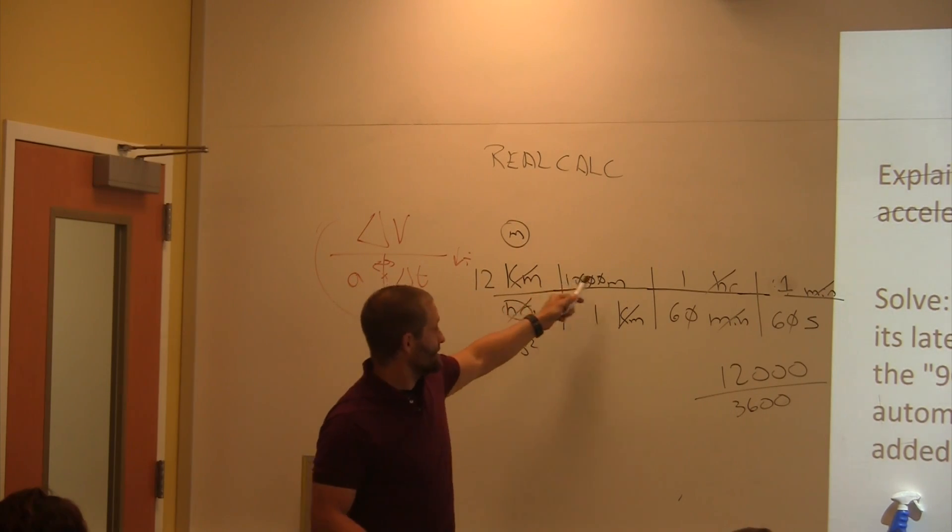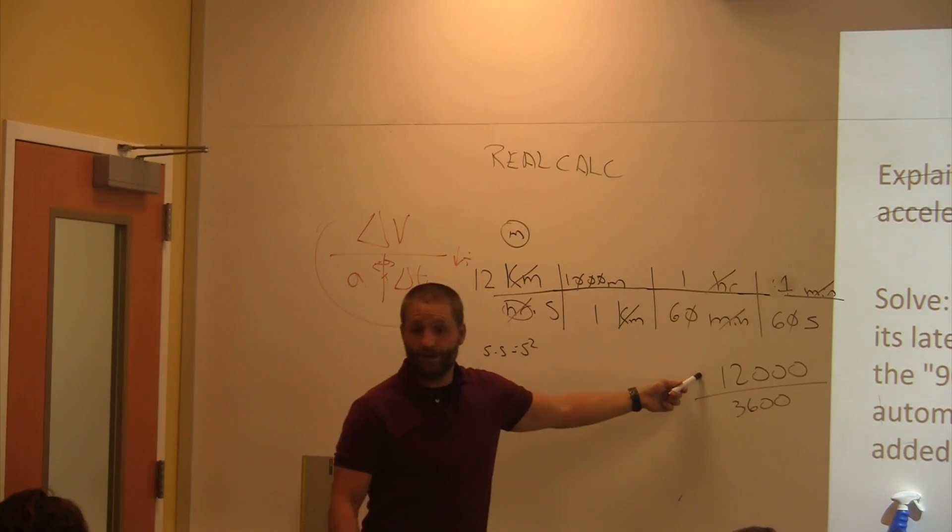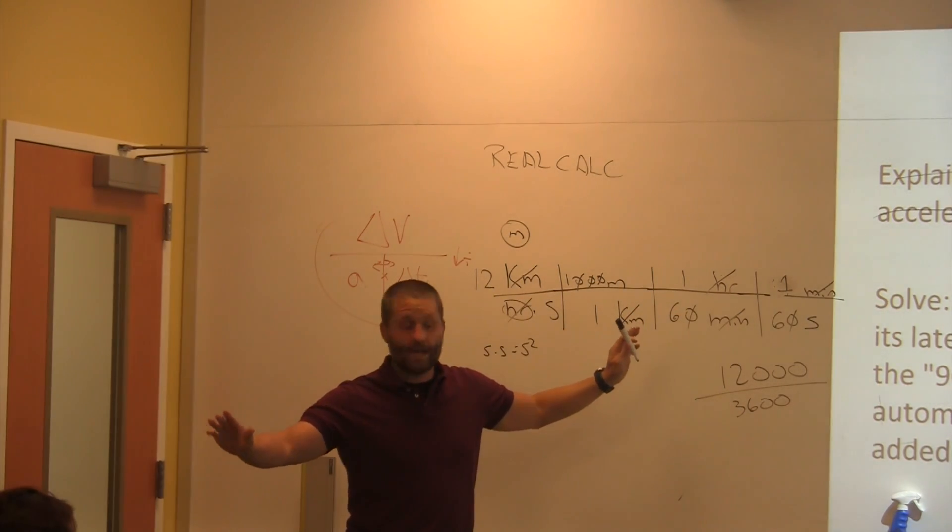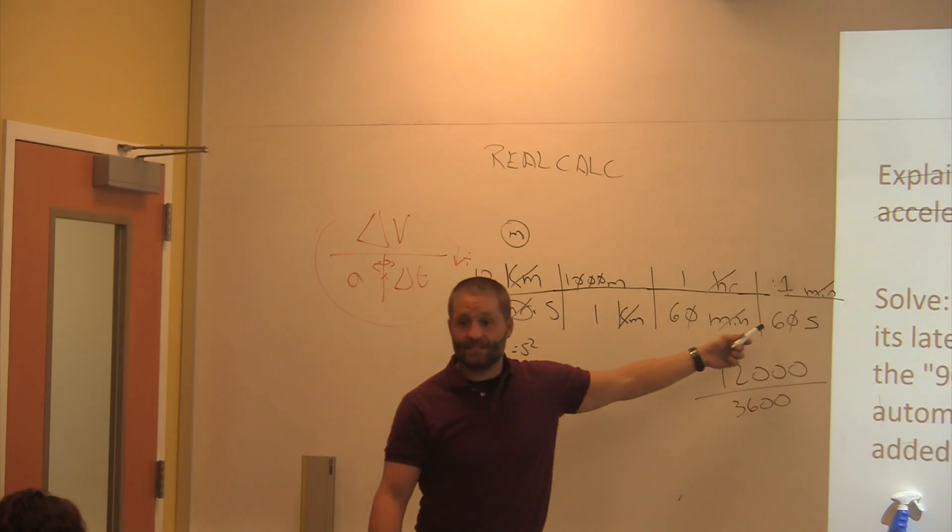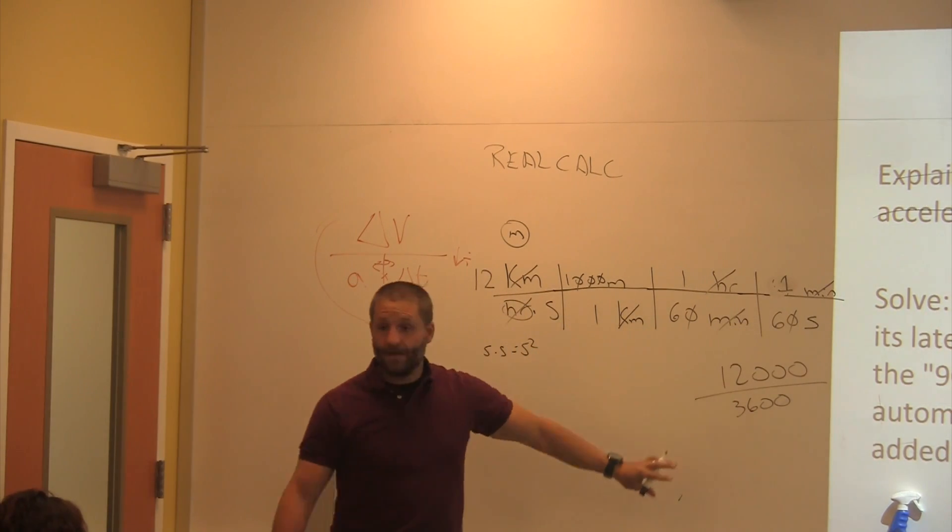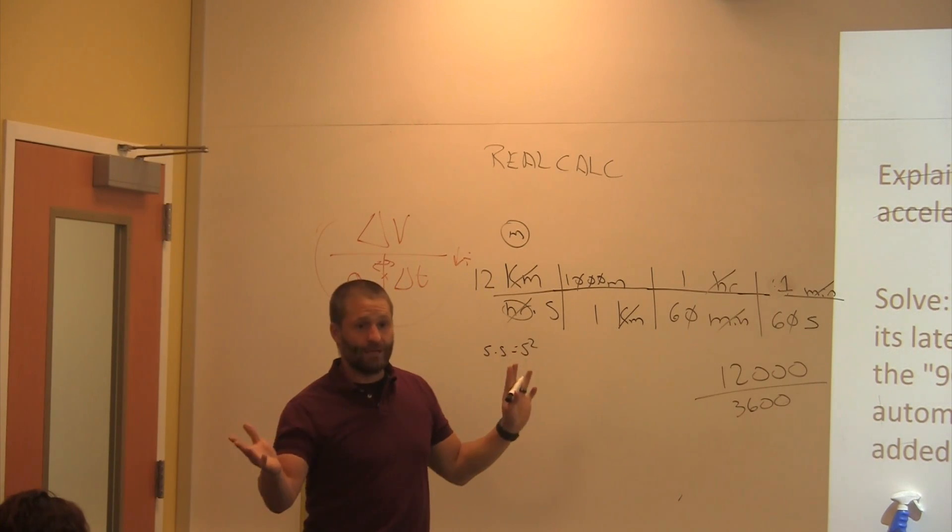This times this times this times this is going to equal this number here. Okay. I do the top first. Okay. Then I do the bottom. 1 times 1 times 60 times 60. And then divide it. Then divide it, yeah. I do them both. In that order. That way I don't screw it up.